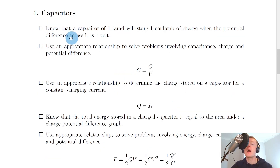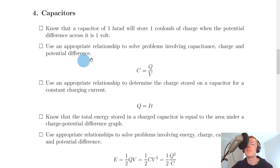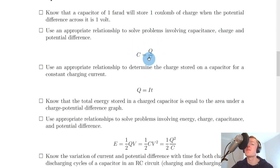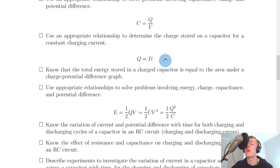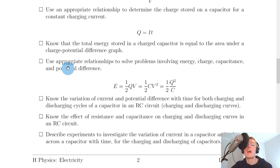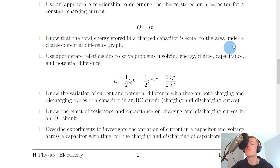Moving on to section four, we have capacitors. First, you need to know that a capacitor of one farad will store one coulomb of charge when the potential difference across it is equal to one volt — that's the definition of the farad. The relationship for capacitance is C equals Q over V, where C is capacitance in farads, Q is charge in coulombs, and V is potential difference in volts. You also need Q equals IT, where Q is charge, I is current in amps, and T is time in seconds — this comes from the definition of electrical current as charge transferred per unit time. The total energy stored in a charged capacitor equals the area under a charge-potential difference graph, which is the same as the work done in charging the capacitor.